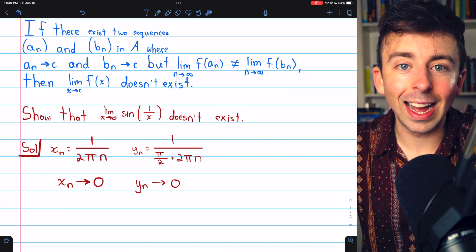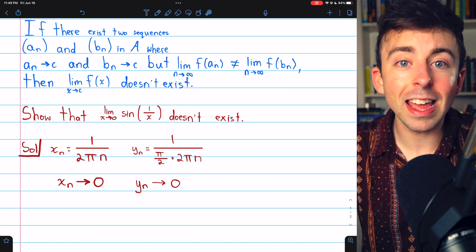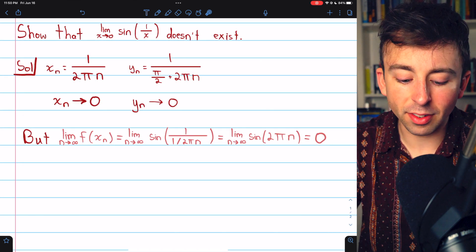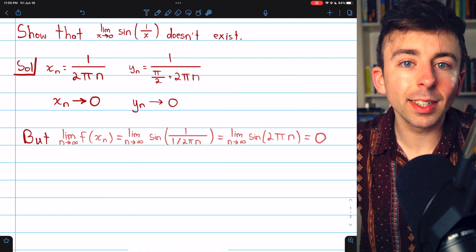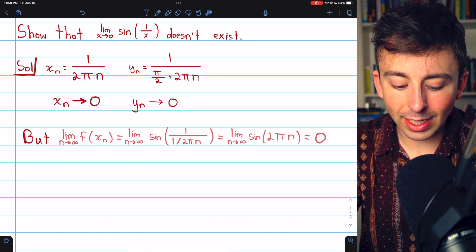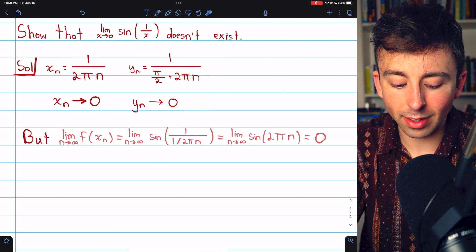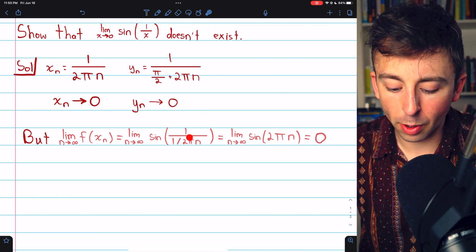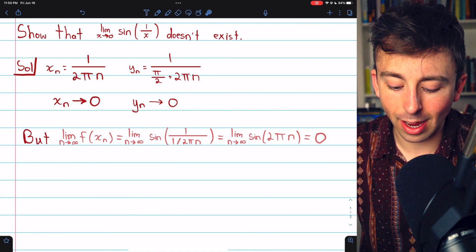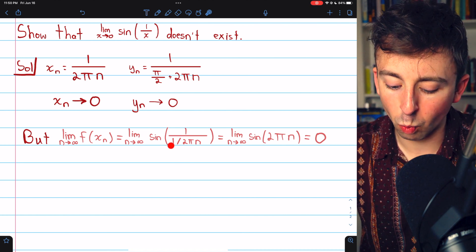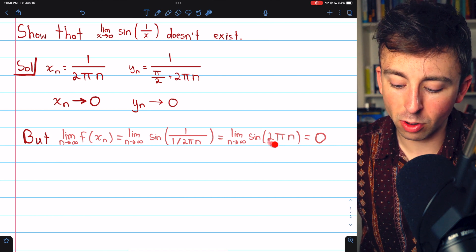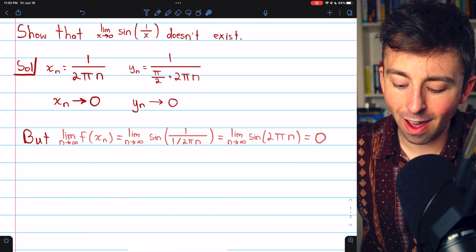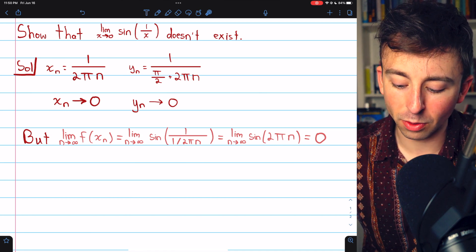So now let's look at the sequences of the images of these. We have two sequences that converge to zero, but what happens if we plug these sequences into the function? The limit of f(xₙ) as n goes to infinity is sin(1/xₙ). So one over 1/(2πn), that becomes 2πn. So the limit of sin(2πn) as n goes to infinity is zero because sin(2π times anything) is zero.